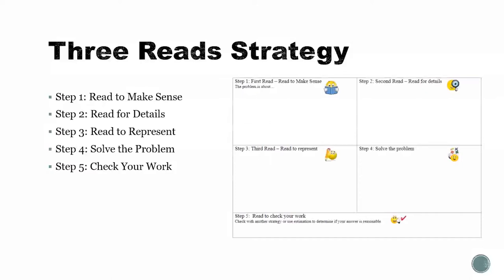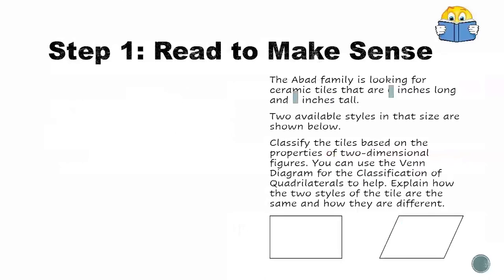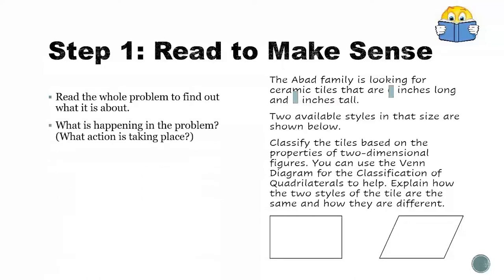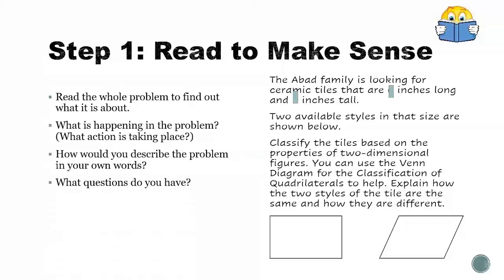This organizer can be used to help you organize your thinking. For step one, we are going to read to make sense of the problem. While we read, we need to find out what the problem is about, think about what is happening in the problem, try to describe the problem in our own words, and think about what questions we might have.